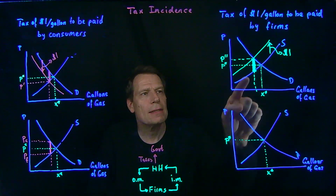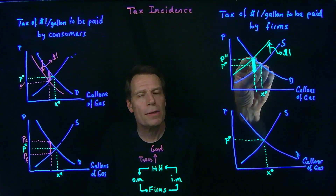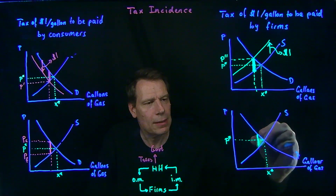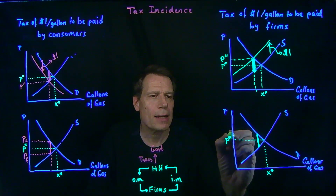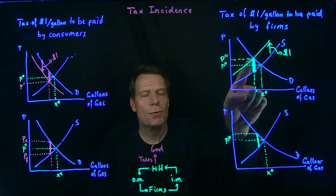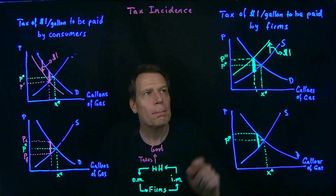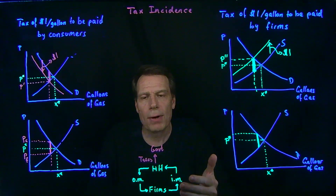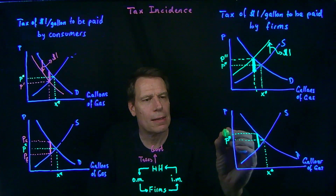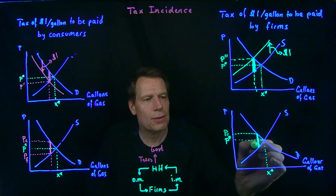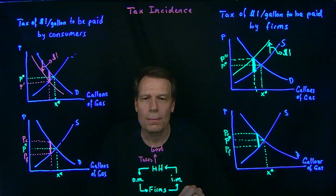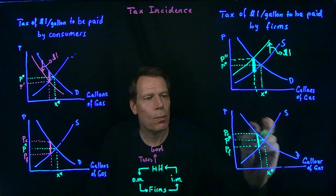In the firm-tax case, we again see the new price determined by a one-dollar wedge fit to the left of the original equilibrium. At the upper end of that wedge is P double prime — the price consumers pay to the firms. But it's not the price that firms get to keep, because the firms still have to pay the dollar of tax to the government. So the price that firms get to keep is exactly a dollar lower, lying at the lower end of the wedge. The quantity in the market is again determined by where that one-dollar wedge lies.